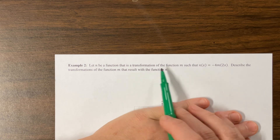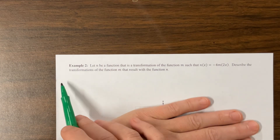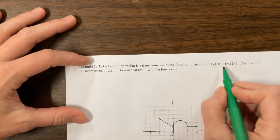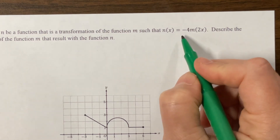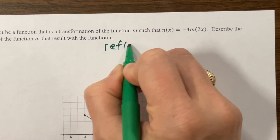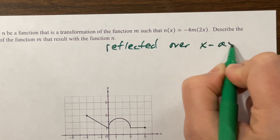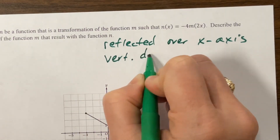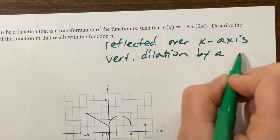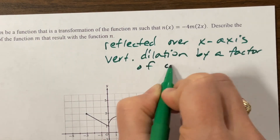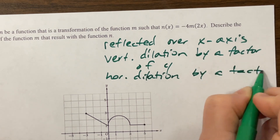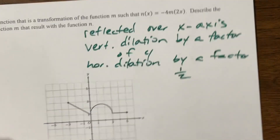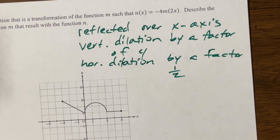Let n be a function that is the transformation of the function m such that n of x equals negative 4 times m of 2x. Describe the transformations. This negative gives us a reflection over the x-axis. It's a vertical dilation by a factor of 4. And it's a horizontal dilation by a factor of one half. With some of these, there is a way to relate the horizontal dilations and the vertical dilations, but it entirely depends upon what parent function we're working with.